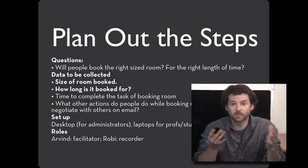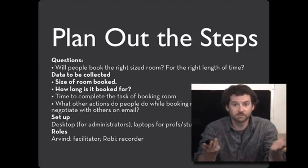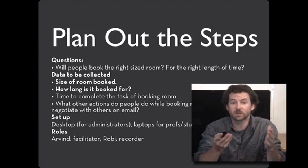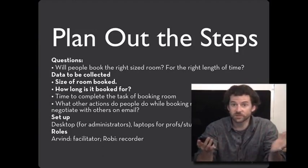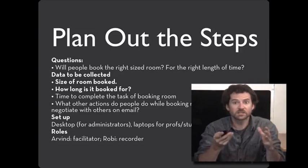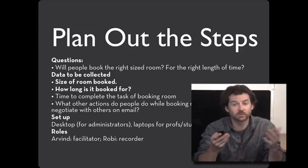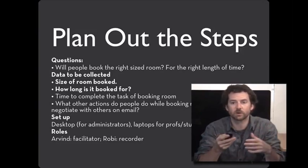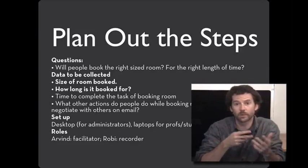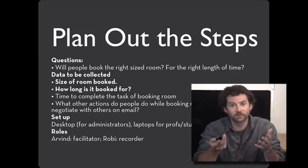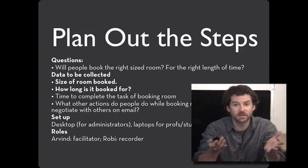Some example questions: will people book the right size room and for the right length of time? This implies some measures — the size of room booked and how long it was booked for. You can also get measures like task completion time. And especially if you have realistic users, you can see how this task interleaves with other things they do. If people are actually booking a room for a real meeting, you might see whether they make notes to order food or need to coordinate over email to get an approximate attendance count.